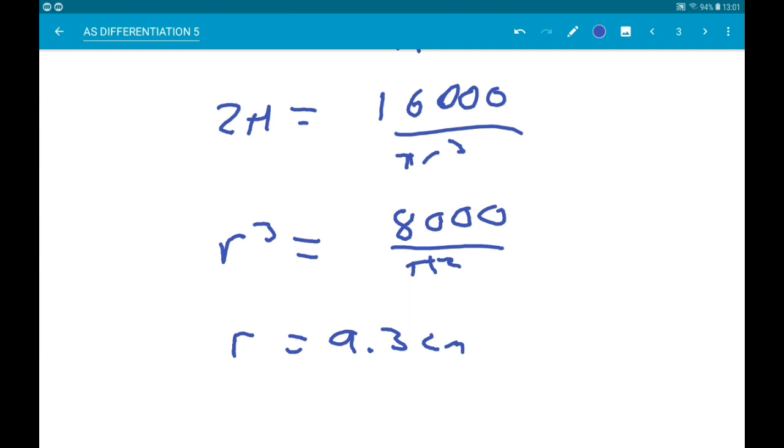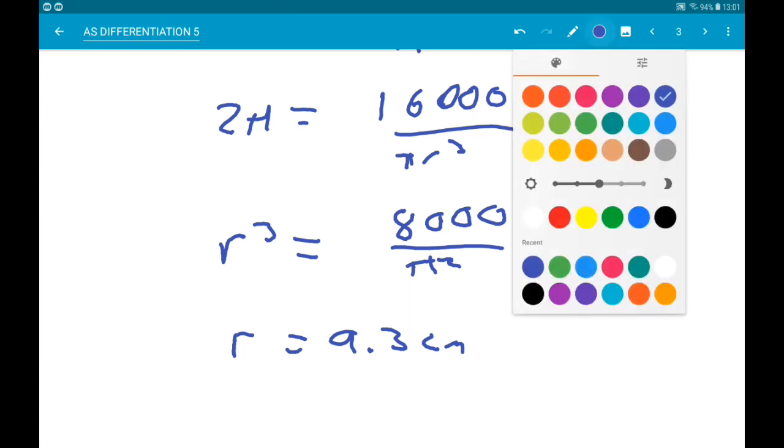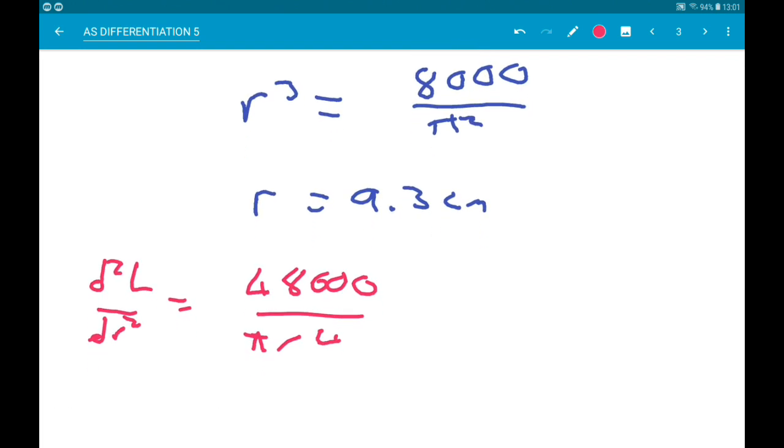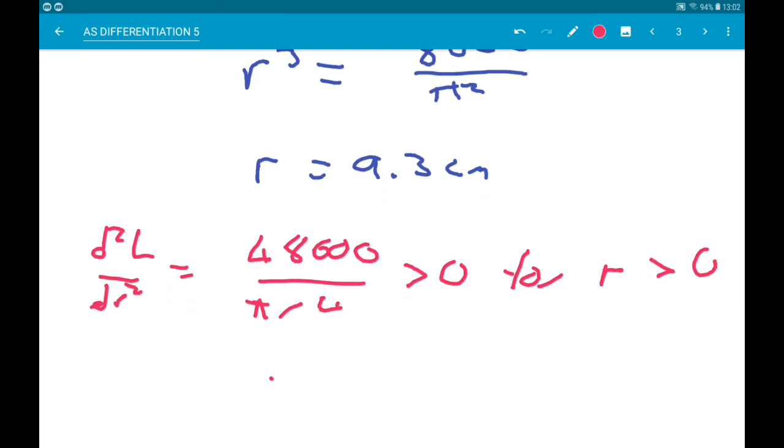Okay now I'm going to before I find h, I'm going to make sure that gives us a minimum. So remember that our second derivative was 48,000 over πr^4. Now we could calculate the value of this, that would be fine, but we can see that that is gonna be positive when r is positive. Therefore our value for L is gonna be a minimum.